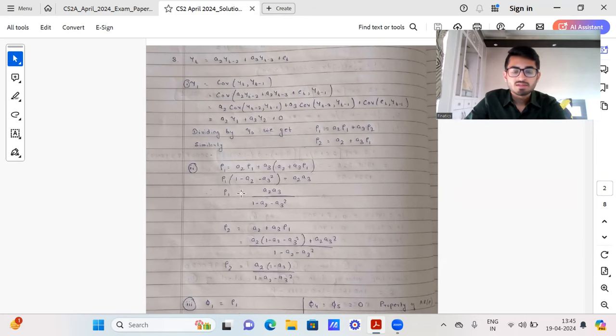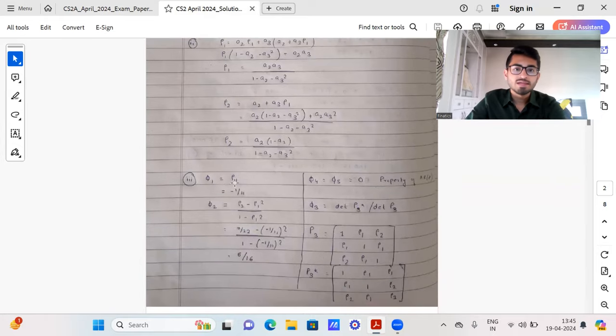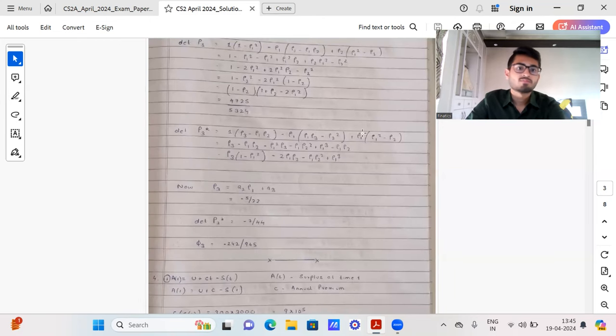So question number three, this is part one. This is part two. Part three, we need to find the PACF at like one, two, three, four, five. It's an AR three process. So formulas are directly given in actual tables. You can use it to compute the values. Four and five would be zero. It's a property of ARP that PACF cuts off when K is greater than P. And five three is determined P three star by determinant P three. This is P three. You get P three star. And then you can go about computing its determinant. So what I'm getting ultimately is five three is minus two 42 by nine 45. So definitely this would have taken some time, especially for doing on word, visualizing things might become a challenge.